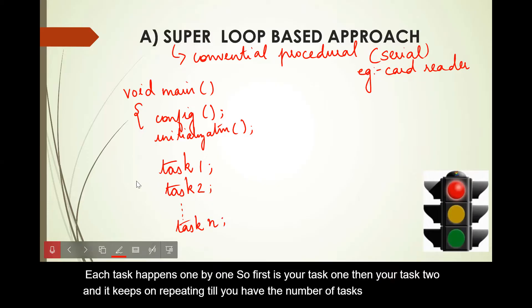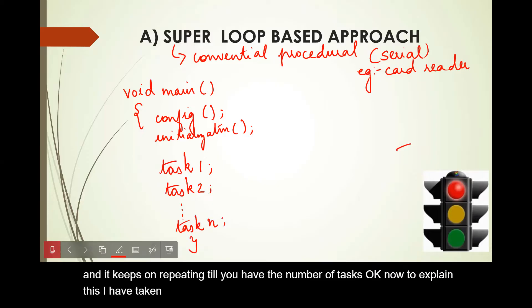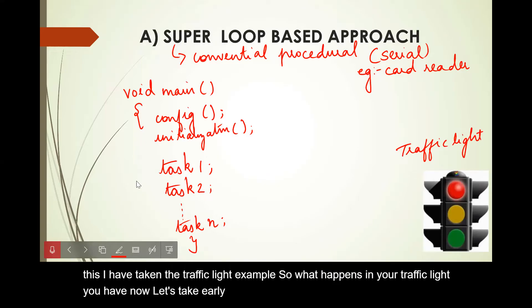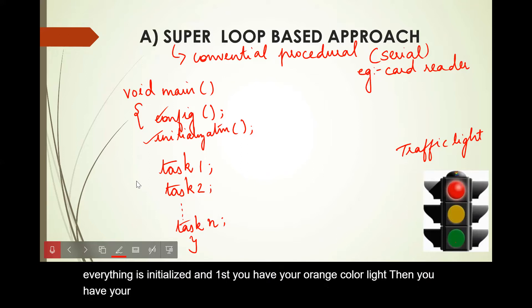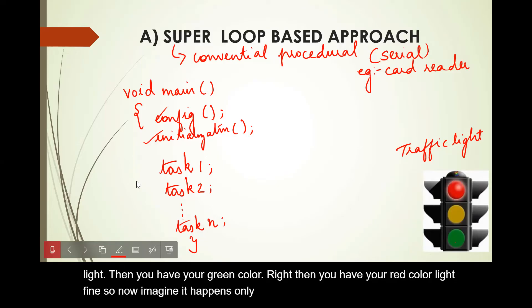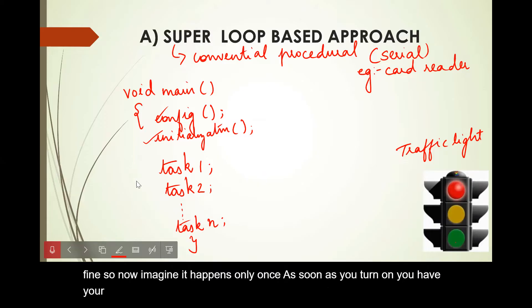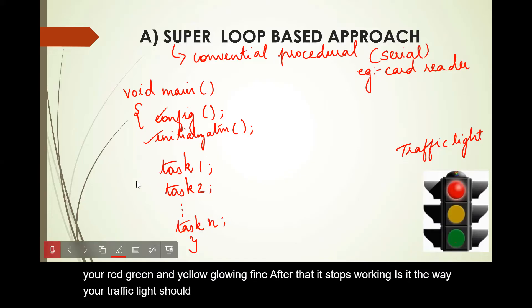To explain this, I have taken the traffic light example. What happens in a traffic light? Early in the morning, everything is configured and initialized. First you have your orange color light, then green, then red. Now imagine it happens only once — as soon as you turn on, you have red, green, and yellow glowing, and after that it stops working. That is not how a traffic light should work. Yellow, green, and red should function continuously till the end of the day.